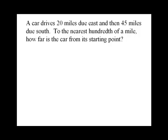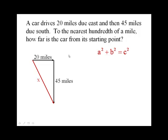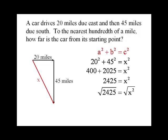Next, a car drives 20 miles due east, then 45 miles due south. To the nearest hundredth of a mile, how far is the car from its starting point? So 20 miles east, we're going to draw the diagram first. 45 miles due south, we want to know how far from the starting point. So that's going to be the hypotenuse. So there's our right triangle. Remember the Pythagorean theorem only works for right triangles. A squared plus B squared equals C squared. Plug in the legs. Do the math. Take the square root. And that gives us about 49.24 miles. So those are two good applications of the Pythagorean theorem.